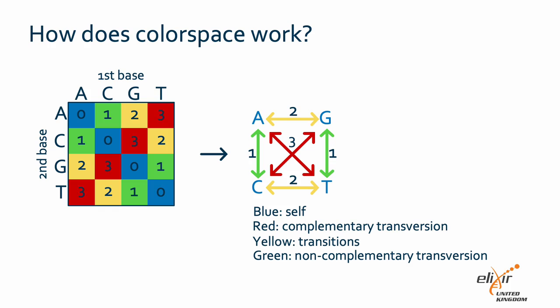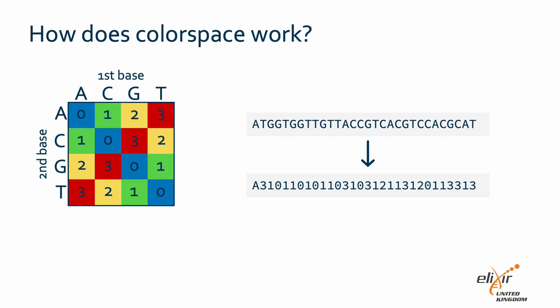These four color categories are then numbered and used to represent sequences in color space. It's important to note that all sequencing data uses color space, even Illumina, but the difference is most approaches consider bases individually, not in overlapping pairs. With the limitations in the technology at the time, the SOLiD approach provided greater confidence in sequencing accuracy.